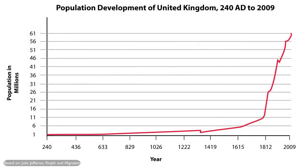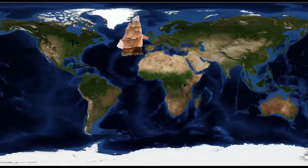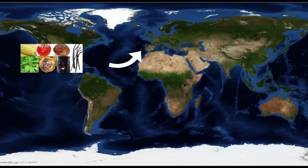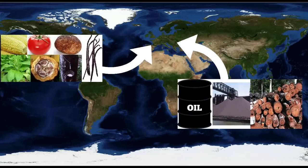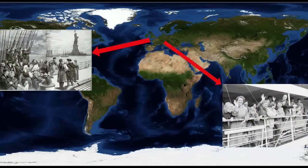From the 17th century, population growth in England and other parts of Europe accelerated due to increases in agricultural production, as well as increasing medical knowledge and technological innovation linked to the Industrial Revolution, but more importantly European expansion overseas. European powers were importing food and resources from other parts of the world that were in short supply at home and exported part of the excess population to the colonies.